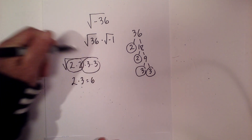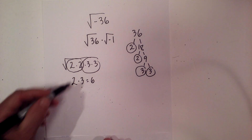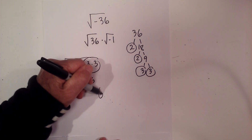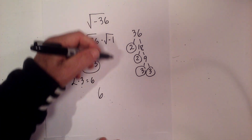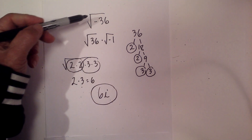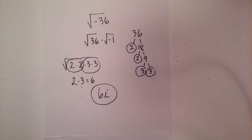So the square root of 36 is 6 and the square root of negative 1 is i, meaning the square root of negative 36 simplifies to 6i. I hope that helps in simplifying negative square roots. Thanks for watching — Moving Math uploads a new math and science video every day, so please subscribe and share.